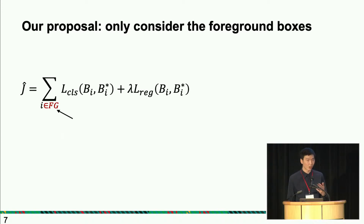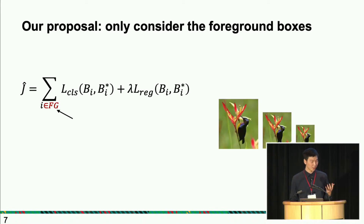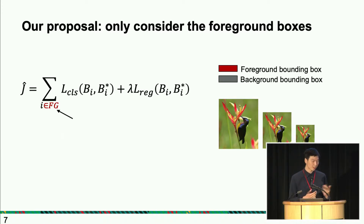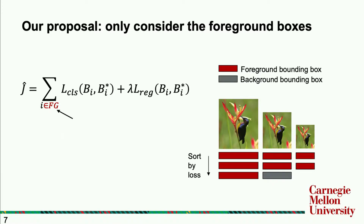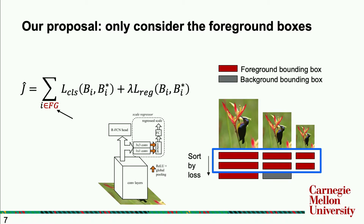Let me give an example of how we evaluate this metric. Assuming one image and three scales: red boxes are foreground bounding boxes, gray boxes are background. We pass all of them through the object detector, then consider only the foreground bounding boxes, sort them by loss, and use the top results to compare across scales to determine which is better. Now that we have a method to determine which scale is better, we have a dataset with input-output pairs to train our scale regressor. We train the scale regressor with mean squared loss.